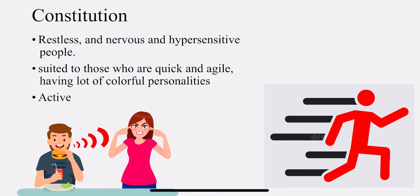Now let us look at the constitution of spider group people. They are restless, nervous, and hypersensitive people. The spider is always restless — in the same way, the spider group people are restless and nervous. Hypersensitive people: you just touch the spider web and it becomes totally sensitive. In the same way, spider group people are hypersensitive. They are suited to those who are quick and agile, having a lot of colorful personalities.